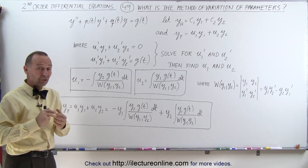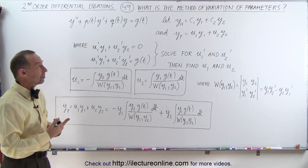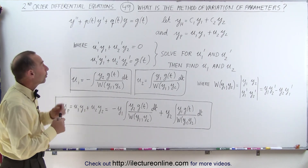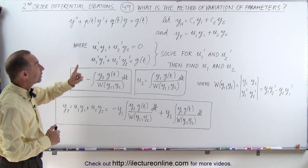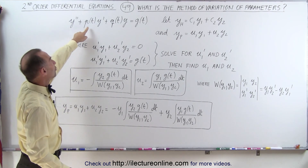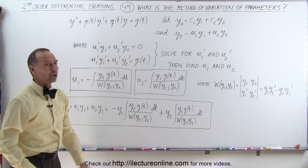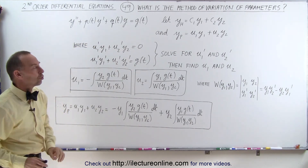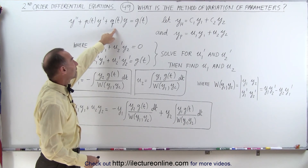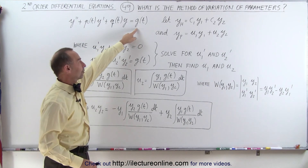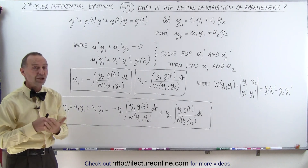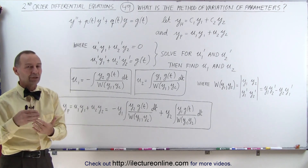This method takes longer and is not as easy as the method of undetermined coefficients. But what we can do with this method is solve equations that have non-constant coefficients — we can have a function of t as coefficients and still solve for both the homogeneous and the particular solution.